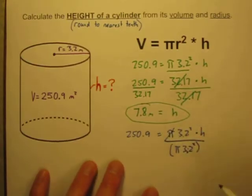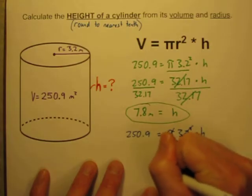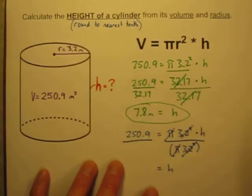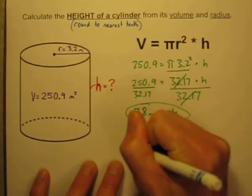Instead of multiplying these together, let's just divide this side by pi times 3.2 squared. And I know, let's just divide right away. Pi divided by pi is 1, and 3.2 squared divided by 3.2 squared is equal to 1, so h is by itself.